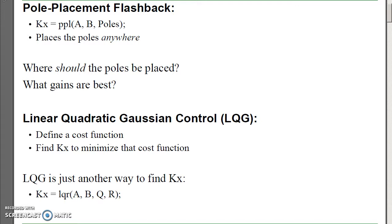Personally, I don't like the word optimal. I just think of LQG as another way to find kx. With pole placement, I'll use the routine ppl: given your dynamics a, b, and your desired pole locations, find kx. LQR is almost the same — given a, b, and my cost function, the weightings on x and the weightings on u, now find the optimal feedback gains. This is a built-in function in MATLAB called LQR. It solves the algebraic Riccati equation. From our standpoint, it's just: find kx.